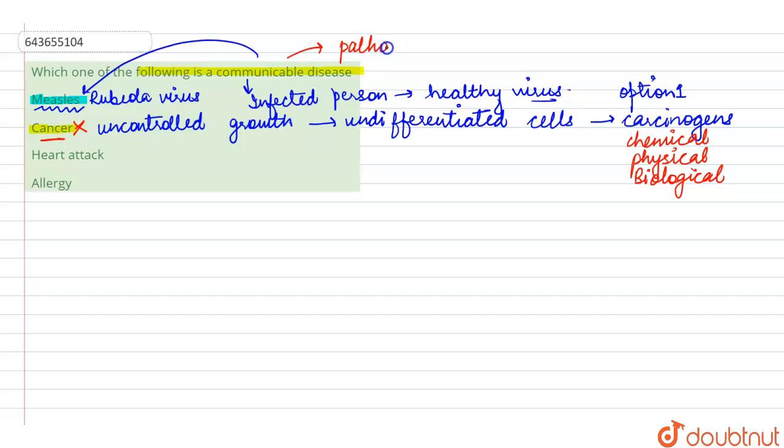So in the communicable disease, one thing which we see is that generally pathogens are involved. Pathogens are the disease causing organisms which may be bacteria, virus, fungi, helminths, or even protozoans. So since in cancer there are no such pathogens involved, so that is why it is a non-communicable disease.